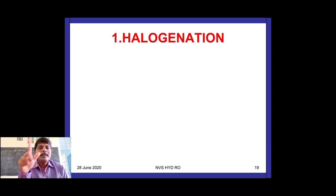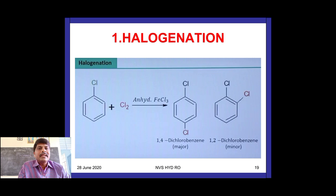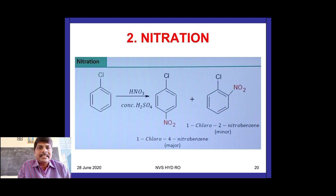Next are the electrophilic substitution reactions — these occur because of the benzene ring. First: halogenation. When chlorobenzene reacts with chlorine in the presence of anhydrous FeCl3 (Lewis acid catalyst), it gives both ortho and para products; para (1,4-dichlorobenzene) is the major product and ortho (1,2-dichlorobenzene) is the minor product.